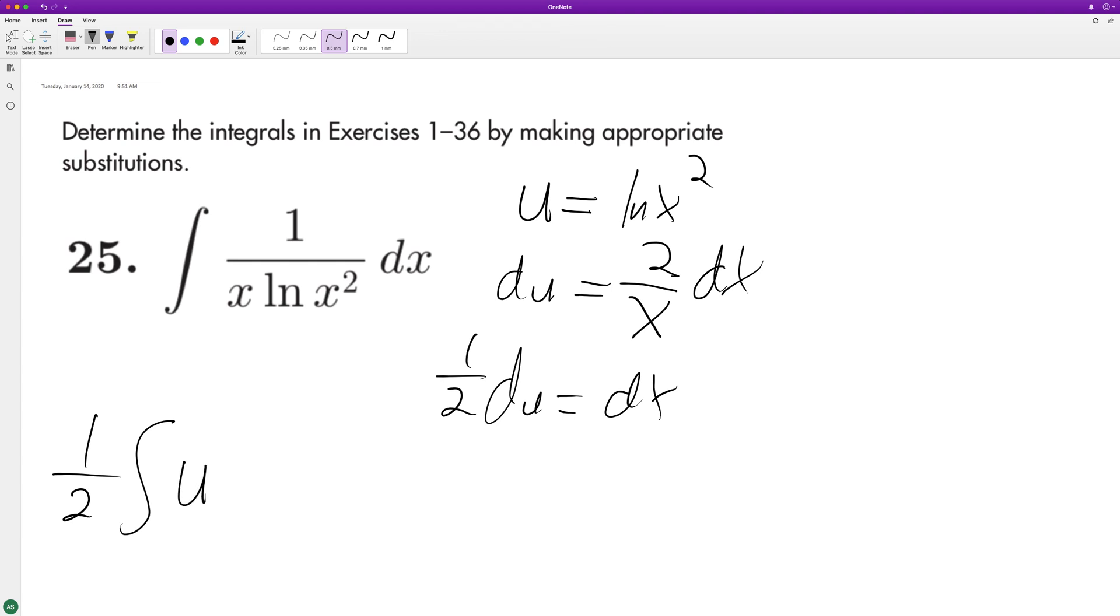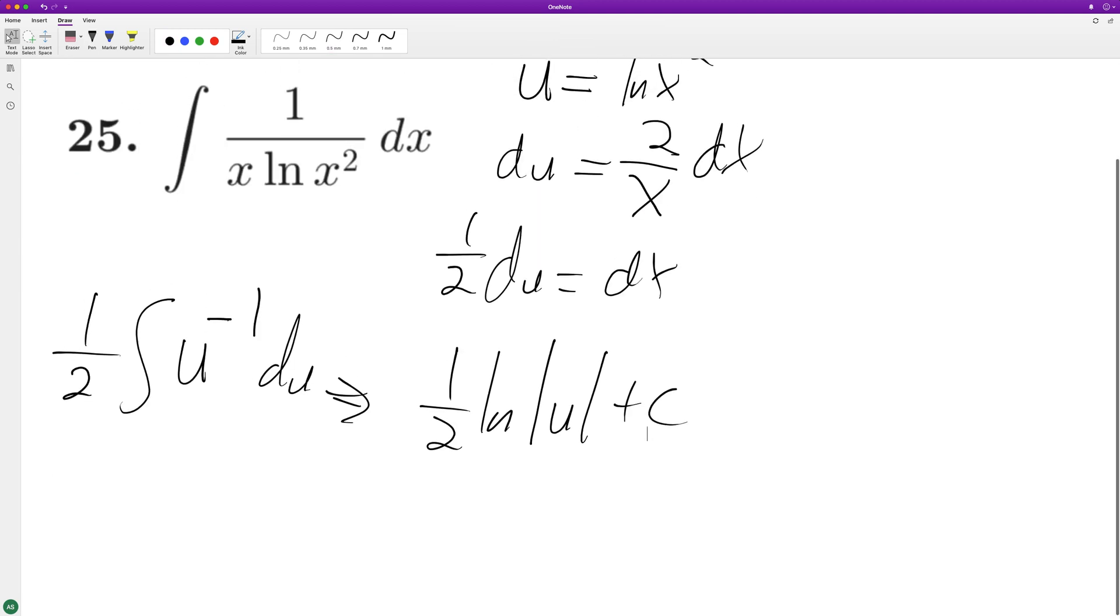negative one, or one over u, either way, du. So when we integrate this, we end up with one-half natural log of the absolute value of u plus C. And then when we substitute back in, what we end up